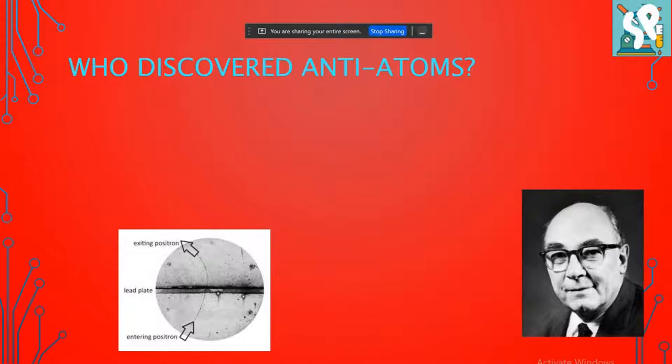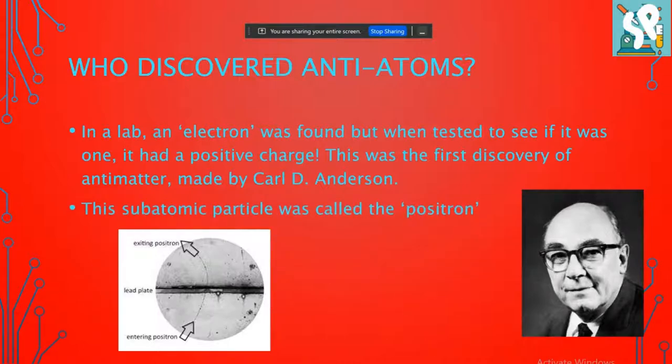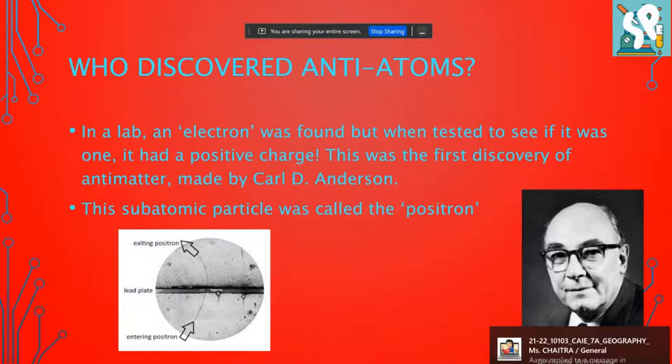So basically, in a lab, an electron was found. But when it was tested to see if it was actually an electron, it had a positive charge. It was a so-called positive electron, dubbed the positron. This discovery was made by Nobel Prize-winning Carl D. Anderson.